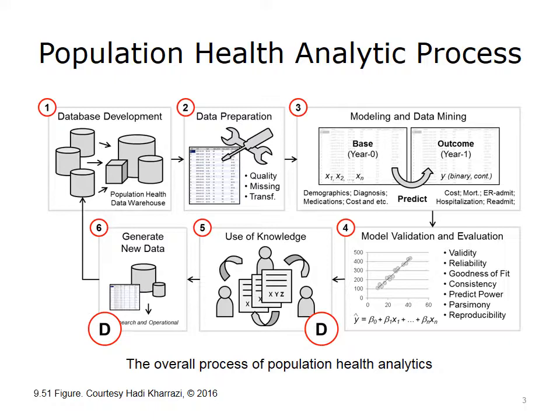The next step contains the development of the modeling and data mining approaches. As depicted in Box 3, this step usually requires a base dataset and an outcome dataset that would collectively include the dependent and independent variables. As illustrated in Box 4, the next step contains the model's validation and evaluation process. In this phase, the analysts use various statistical and data mining concepts to measure how good the model is in differentiating the outcome variable and how reproducible it is when used on other datasets. As pictured in Box 5 and 6, a critical step after an acceptable model is developed is to apply it within the context of a population health management workflow. As marked by Circle D, this lecture discusses some use cases of population health analytics. Other phases of the population health analytics process are discussed in other lectures.